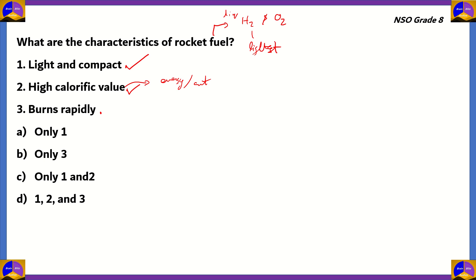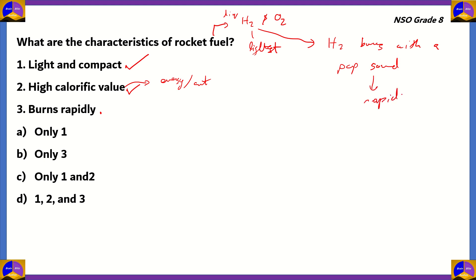The third characteristic is burns rapidly. When we burn hydrogen, we find that it burns with a pop sound, which means that it burns very rapidly. Therefore, all three characteristics are true, which means option D — one, two, and three — turns out to be the right option.